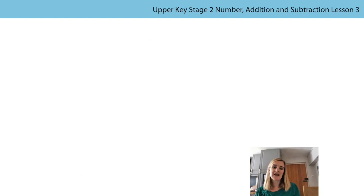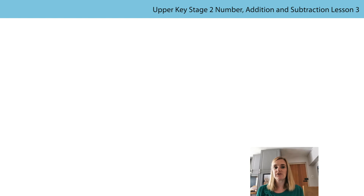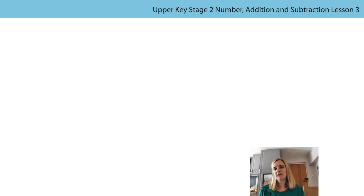Now we're ready to start today's session. You might need to get yourself some paper and a pencil - if you haven't already done that, pause the video now and go and find some. Today's session we're going to be again looking at those addends and using our generalised statement of increasing one addend and decreasing the other by the same amount to keep our sum the same. But today we're going to be thinking about decimal numbers, so I just wanted to do a quick reminder before we get started.